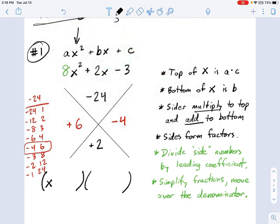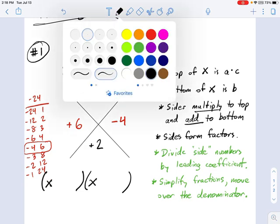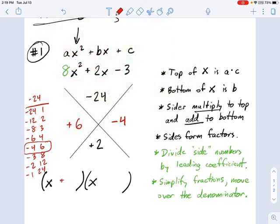So we have X starting off on the left, and then we have this plus 6 and X minus 4. Now, if you check and try to multiply all this stuff together, you're going to see this doesn't work.